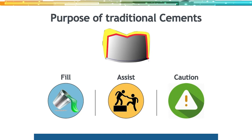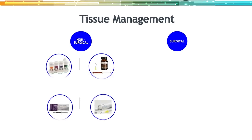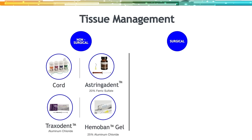We have to understand the differences in substrates and the correlation between failure and success with our preparations. Remember: the purpose of a traditional cement is to fill the micro gap between the crown and the tooth at the margin and underneath, and to assist in retention and resistance — not to create the retention and resistance. The best cement cannot overcome a poorly designed preparation. Let's also talk about tissue management, because even the best cements and best preparation won't work if you don't have proper tissue management and fluid control — saliva and blood.